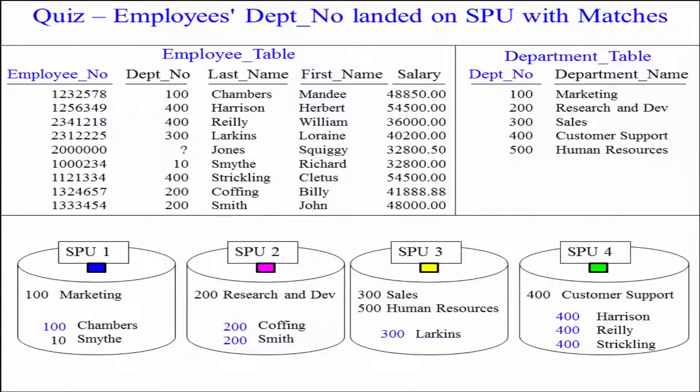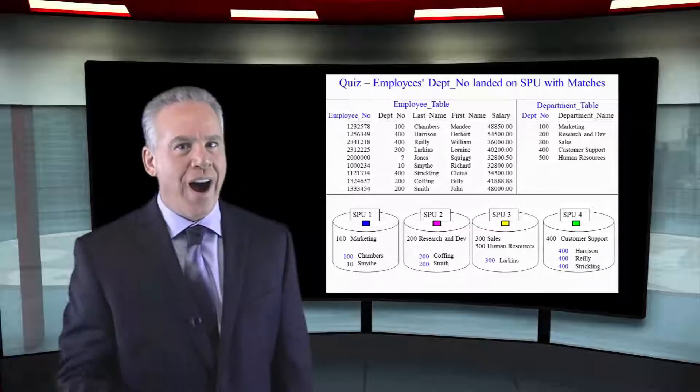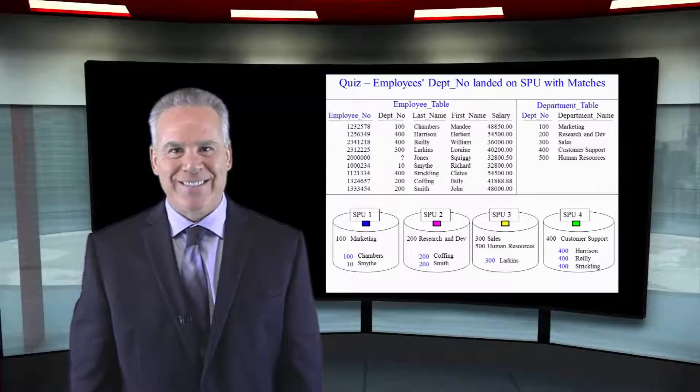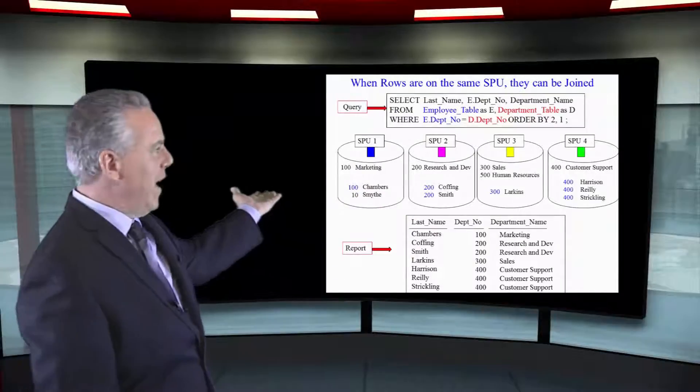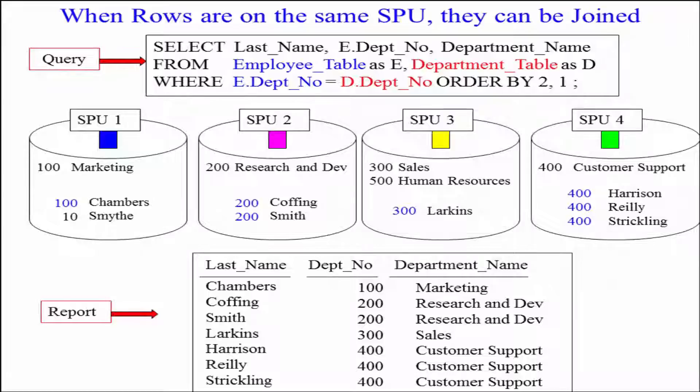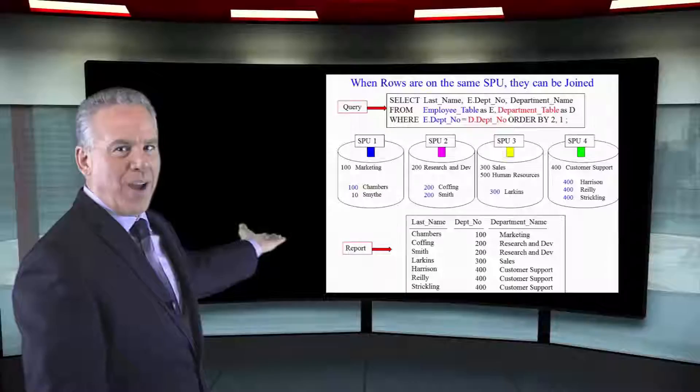As you can see, all of the employees in department 100 went to the right SPU. In 200, the right SPU. And that's how we're going to get the matching rows on the same SPU. You can see we've got the data on the correct SPU for joining. And then our report happens right afterwards.